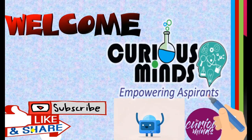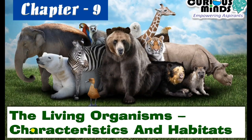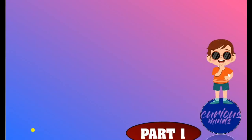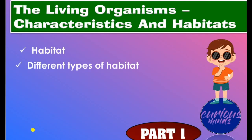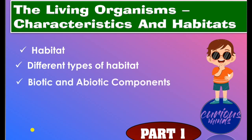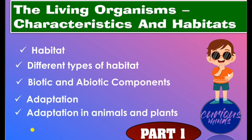Welcome to Curious Minds. Today we are going to study our new chapter, Chapter 9: The Living Organisms. This is Part 1 of our chapter in which we study habitat, different types of habitat, biotic and abiotic components, adaptation, adaptation in animals and plants, then we discuss questions.